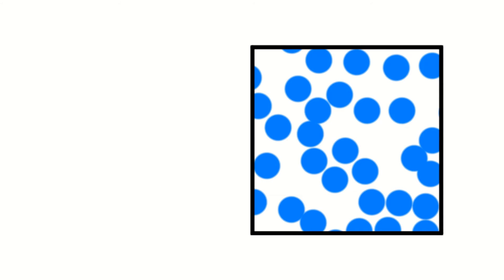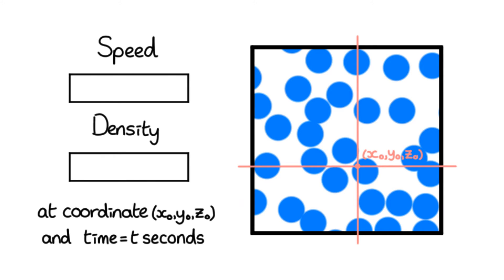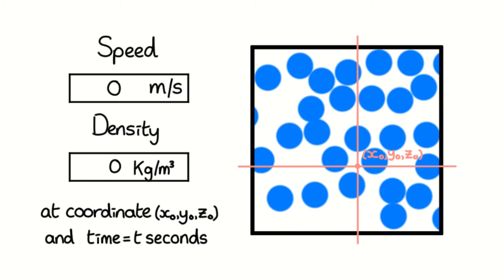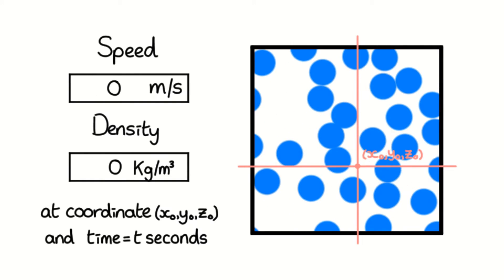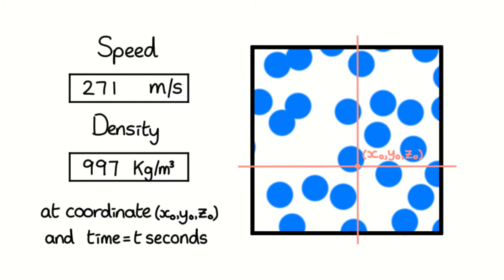How do we put our finger on the values of different fluid properties, such as speed and density, at a certain point in space and time in the fluid, if the molecules are constantly moving and colliding randomly? In other words, how do we know whether there will be vacuum or a molecule at our chosen point in space and time?